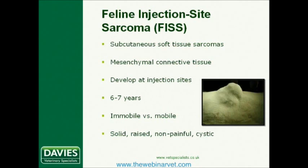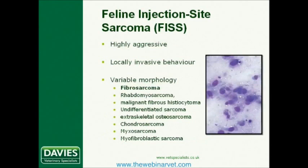Tumours themselves are usually solid, raised, non-painful and often cystic. Some will be mobile under the skin and others will be more firmly attached to underlying tissues. These tumours often appear well circumscribed or even encapsulated, but despite their gross appearances, they tend to have poorly defined histological margins and often infiltrate through fascial planes in a highly aggressive and very locally invasive way. They have long tentacles of tumour extending from the edges of the palpable mass, infiltrating into surrounding subcutaneous soft tissue and muscle.